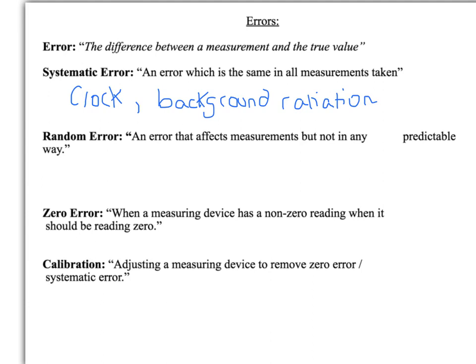A random error is one that affects measurements but it doesn't affect them in a predictable way. A classic example of this during an investigation is temperature, because that's not something you can count on as being constant unless you have a very well controlled expensive laboratory. Typically that's not something you can control. So those are the two types of error.